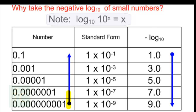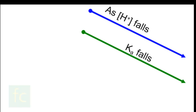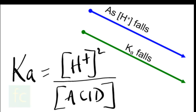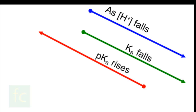You can see the benefit of taking the negative log of a small number — 0.000000001 becomes simply 9. However, while you get simpler numbers to deal with, the number with the smaller Ka turns out to be the number with the larger pKa. As the concentration of hydrogen ions falls, the Ka falls as well, since Ka equals the concentration of hydrogen ions squared over the concentration of acid. And as Ka falls, the pKa rises — there is an inverse relationship between Ka and pKa.